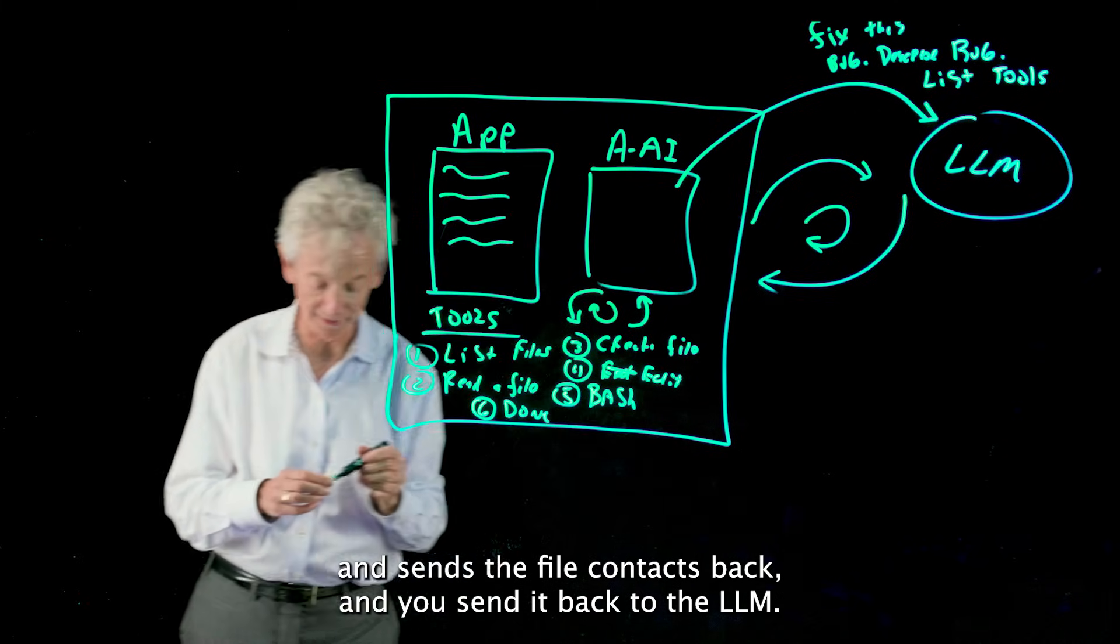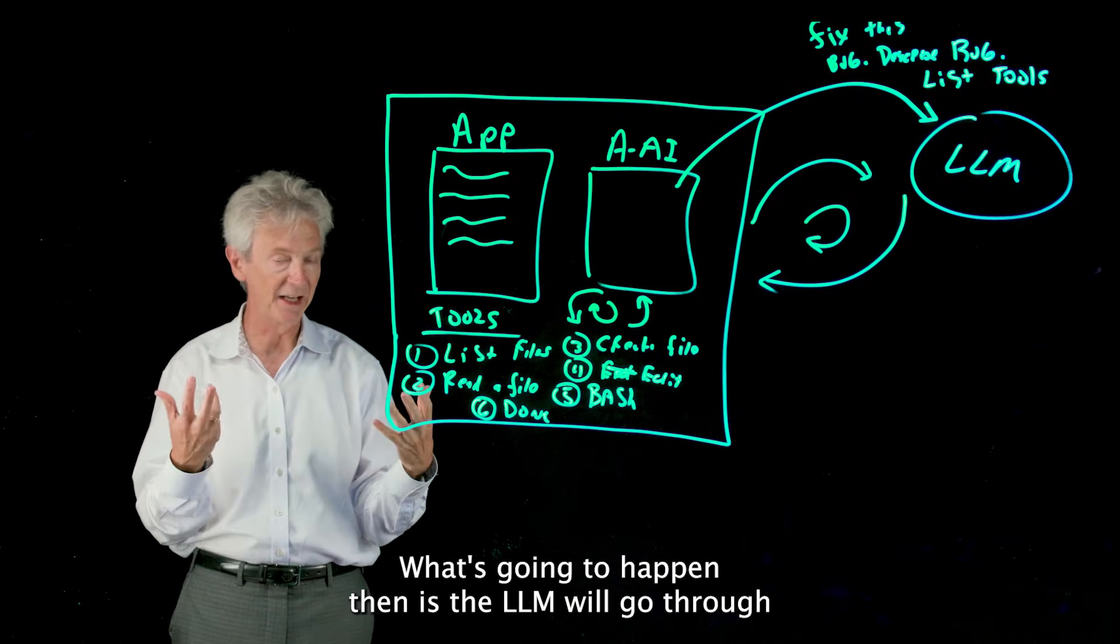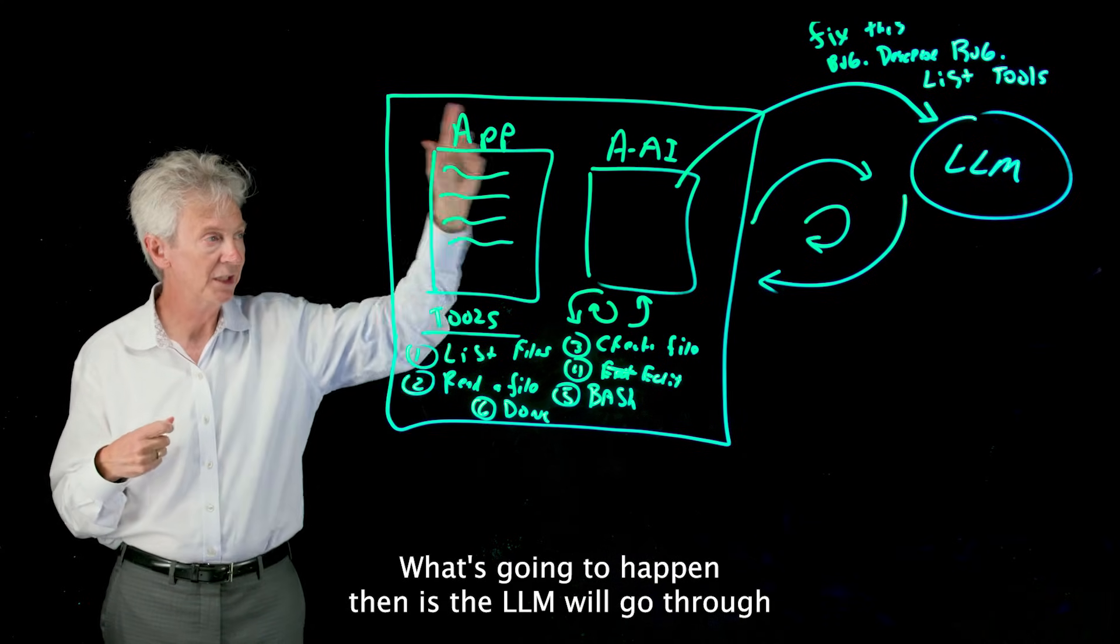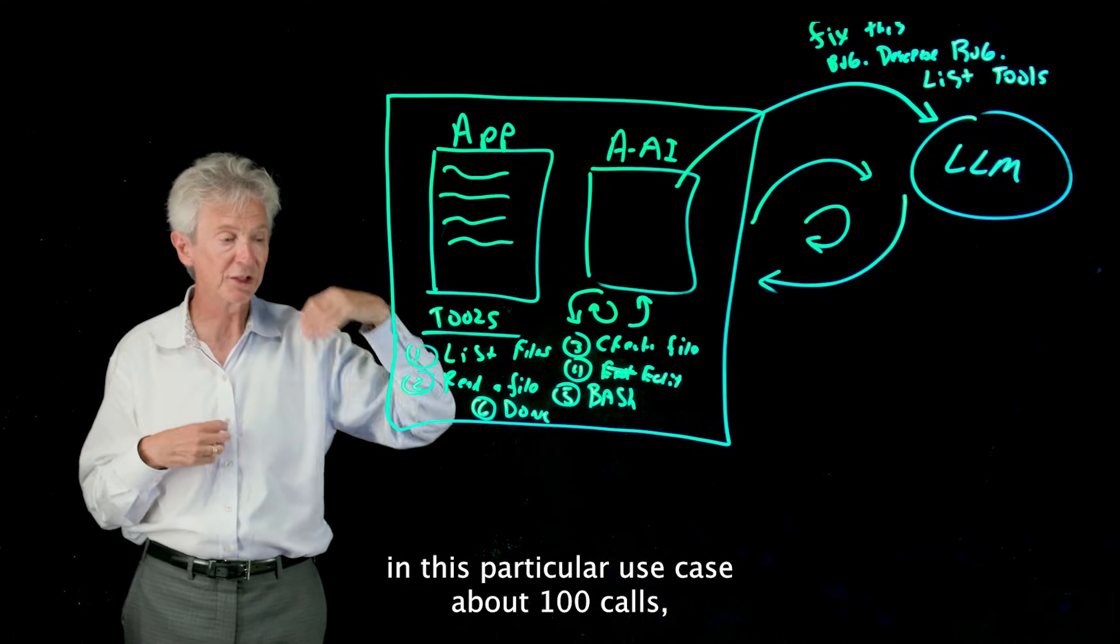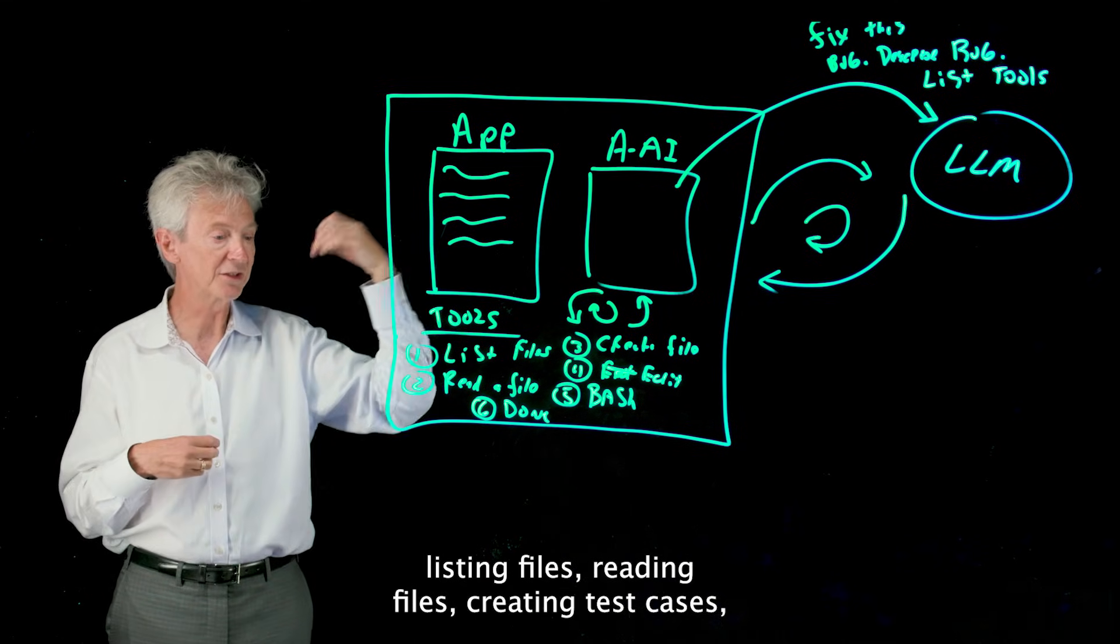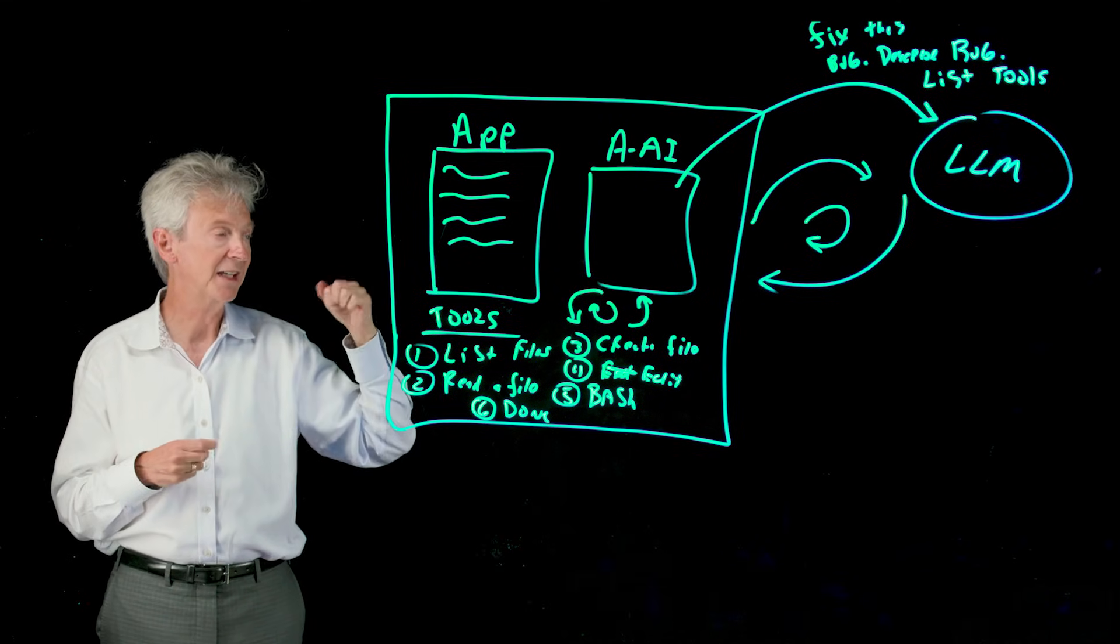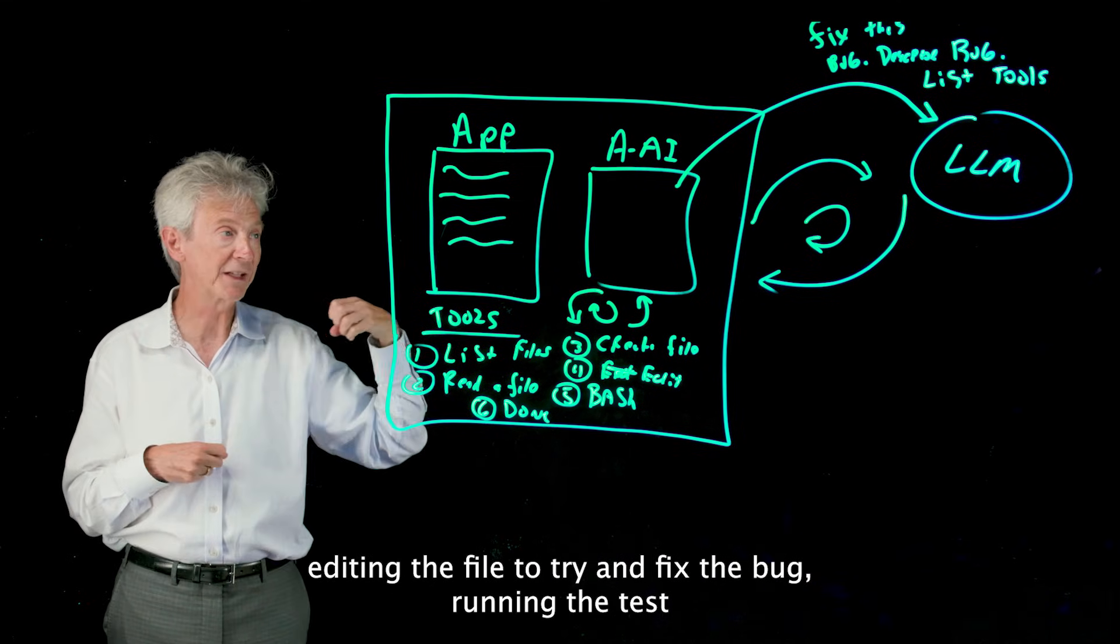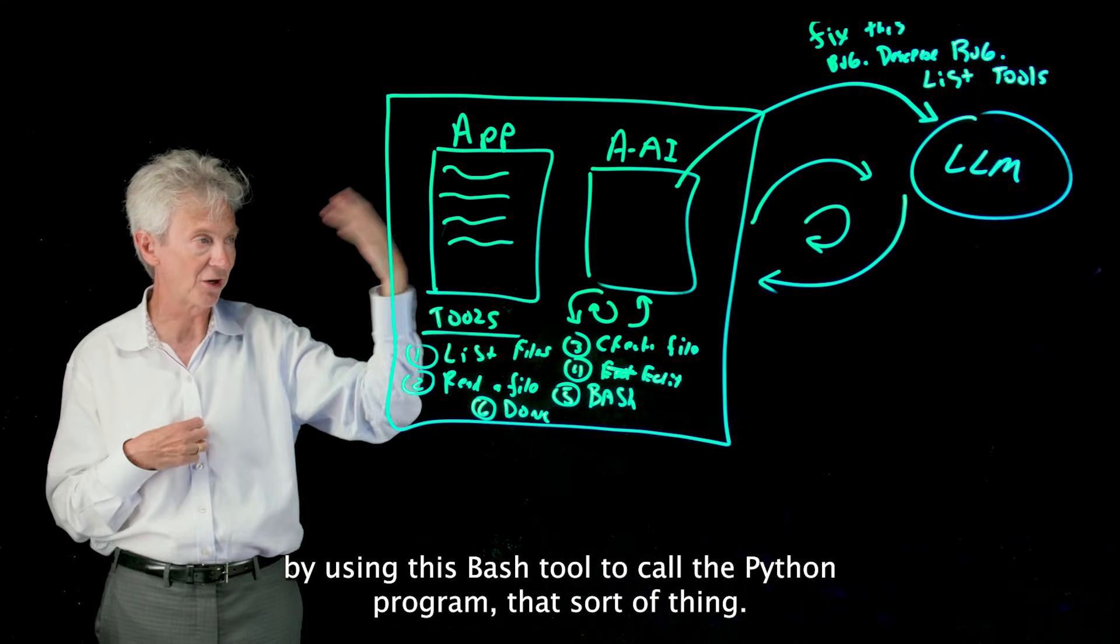And that is actually it. What's going to happen then is the LLM will go through, in this particular use case, about a hundred calls: listing files, reading files, creating test cases, editing the file to try and fix the bug, running the test by using this bash tool to call the Python program, that sort of thing. It'll keep iterating.